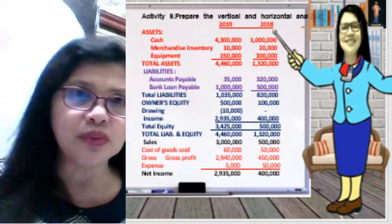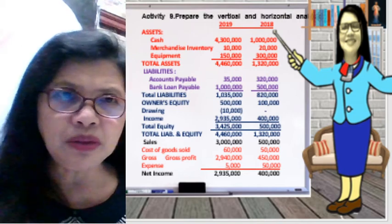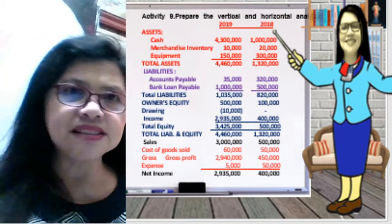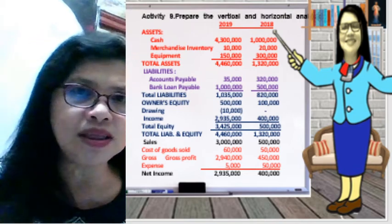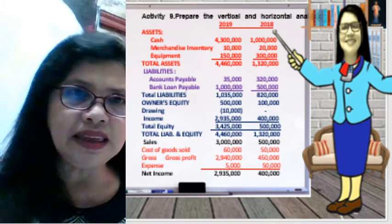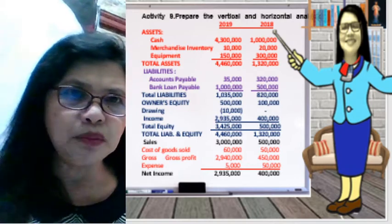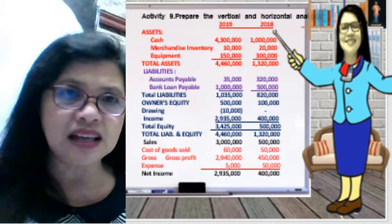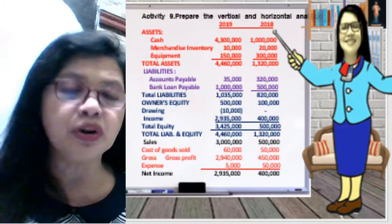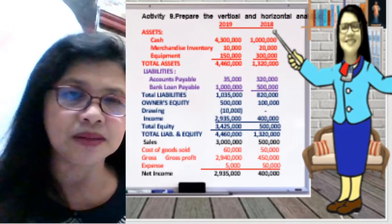Now let's start. We have here the assets of 2019 and 2018 — assets, liabilities, equity, and the sales account or the income statement accounts.